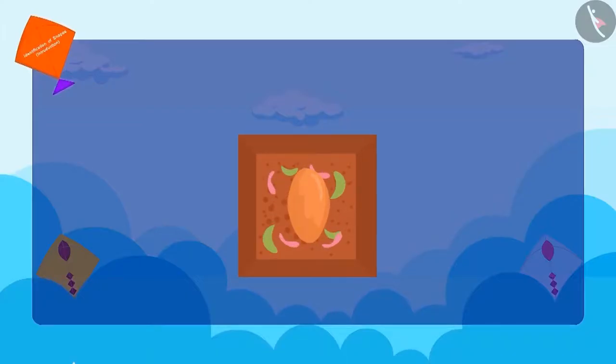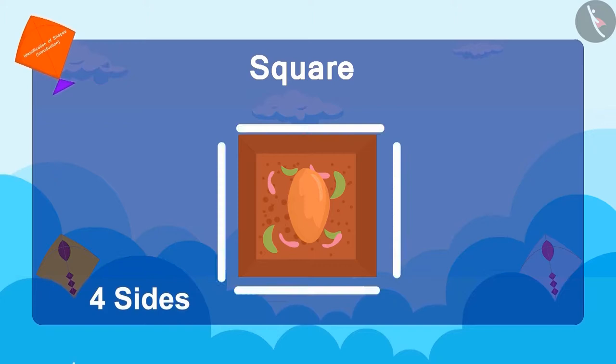Children, what shape is it? This is a square. It has four sides. Do you know a unique thing about the square? All its sides are of equal length.